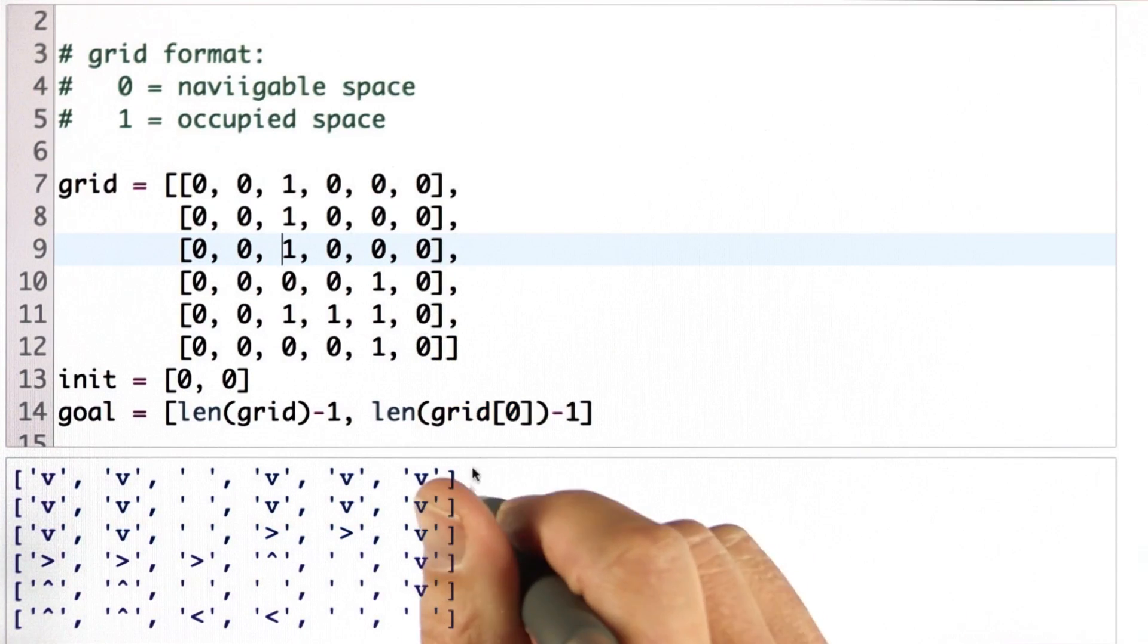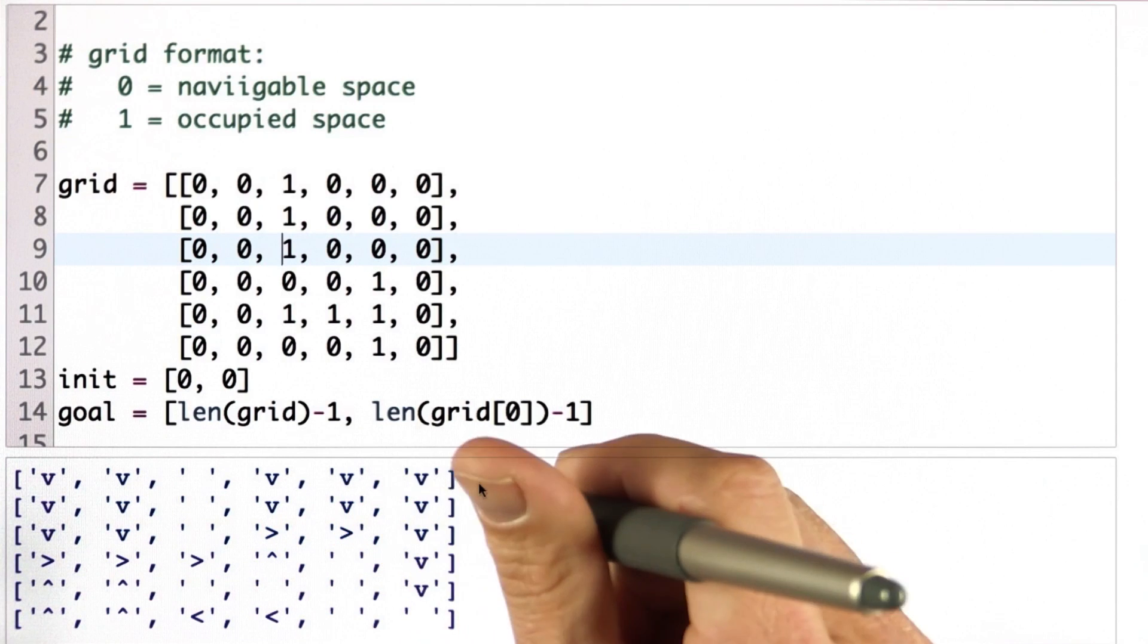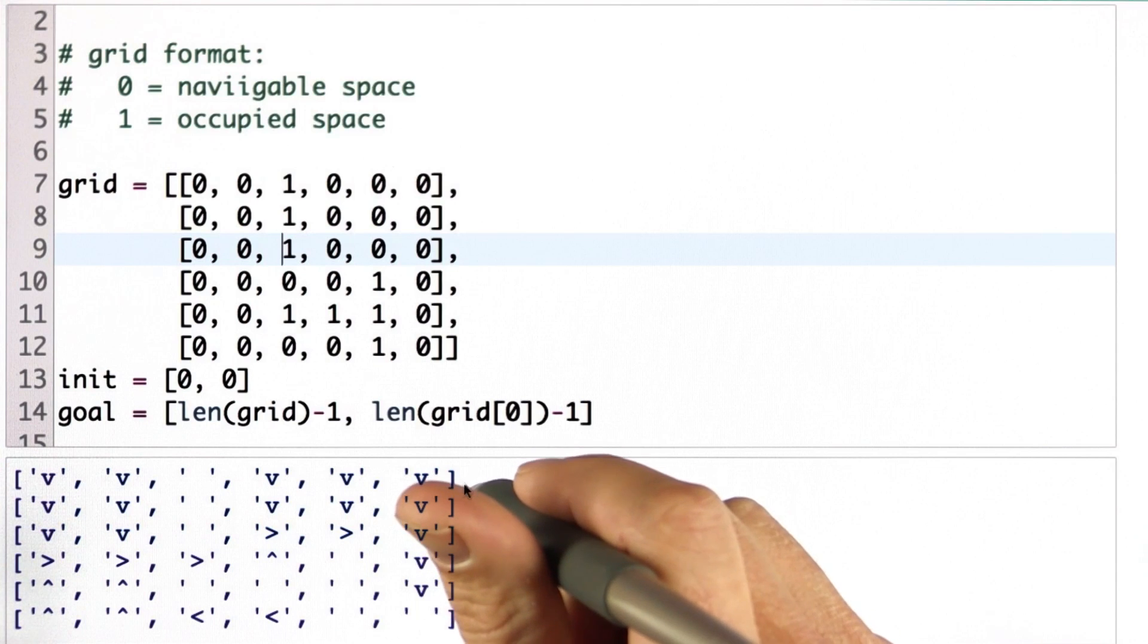And I want you to write code that outputs this policy, which is, in many ways, very similar to the path outputted by A star.